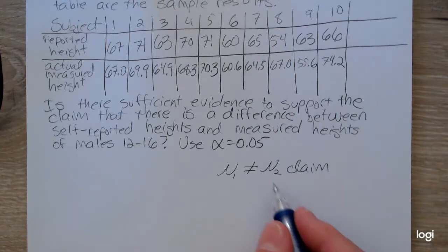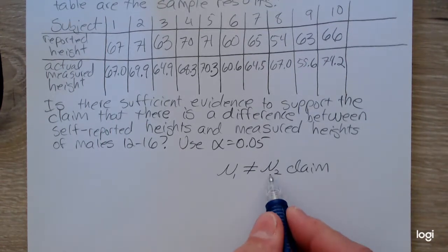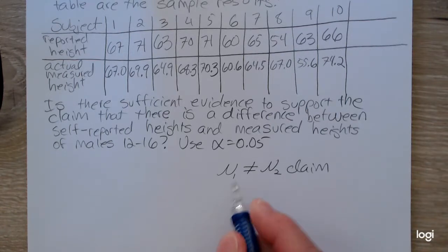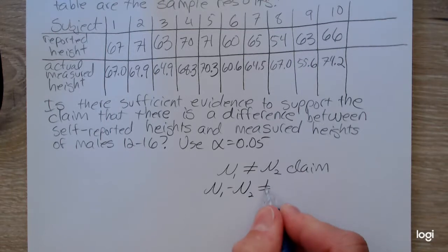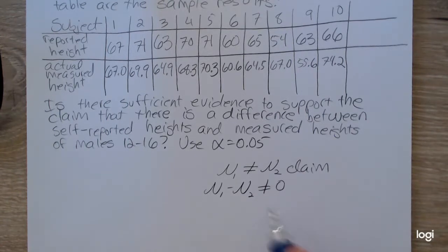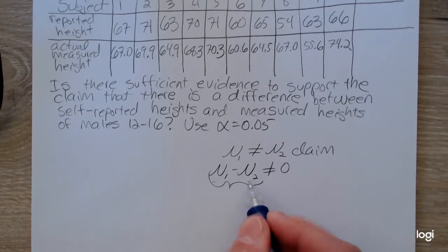For the paired t-test, we rewrite this in terms of one parameter, mu sub d. Moving mu sub 2 over to the left side using subtraction, I'll get 0 on the right side. And I want to relabel this difference as mu sub d.